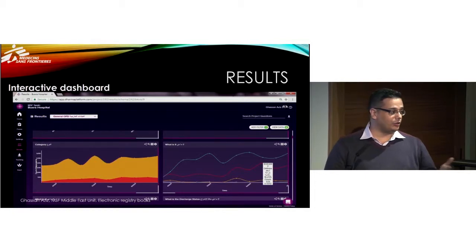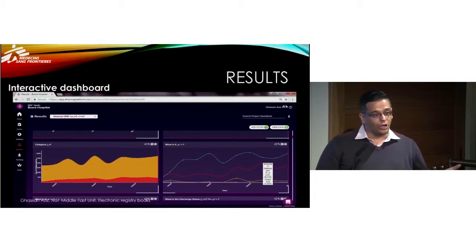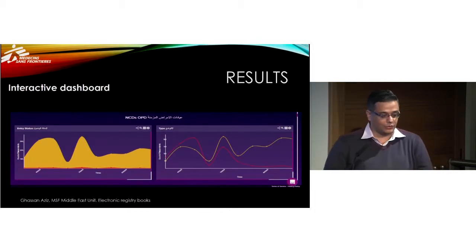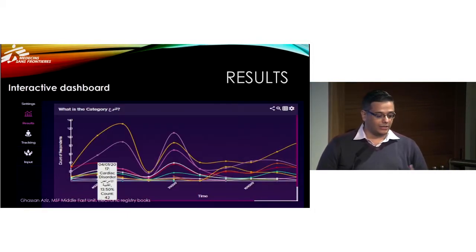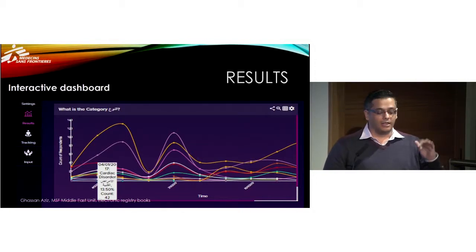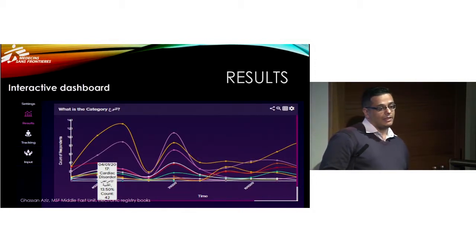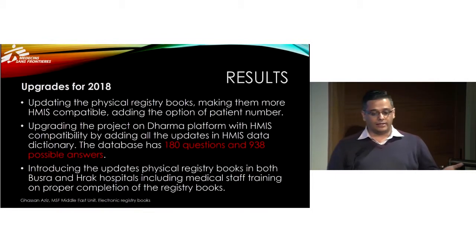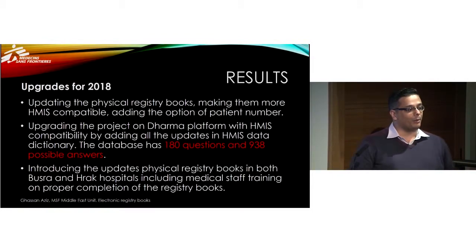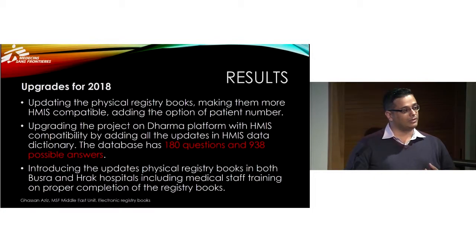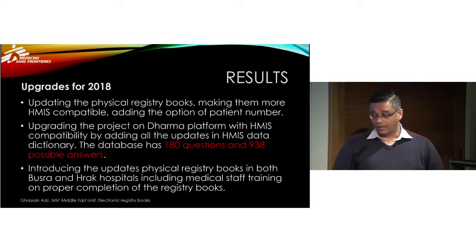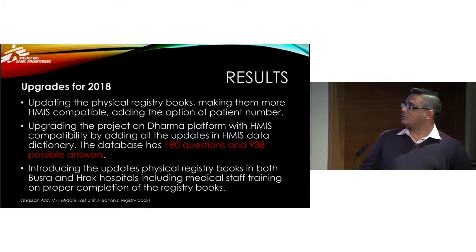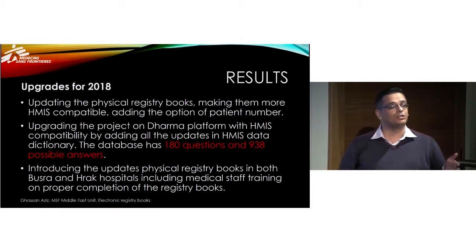There was an interactive dashboard that you can use to follow the progression of patient data across different departments. For example, you can see the NCD department and the ups and downs between different diagnoses in that hospital. That was very nice, but we decided to upgrade it for 2018, making it even more compatible with the standard MSF tool, the HMIS — so we had more questions and more answers. The possible scenarios for those 180 questions, with almost 1,000 answers, is more than 15,000 possible options in the database.